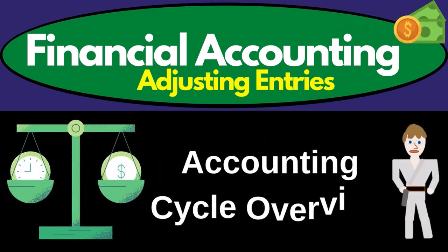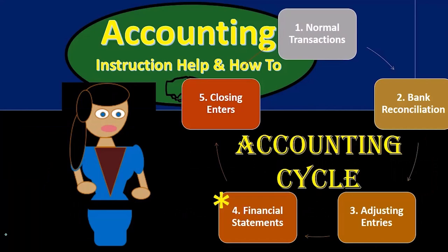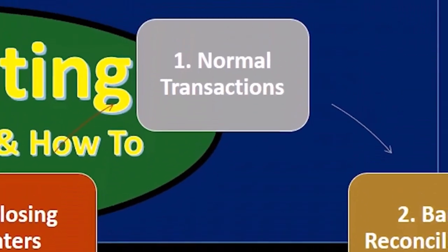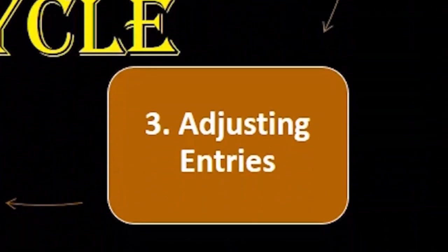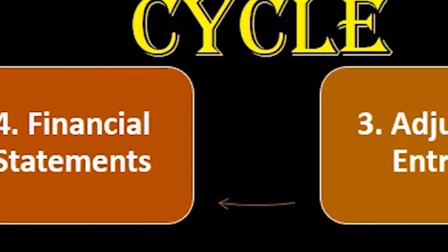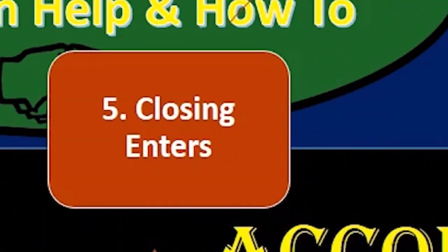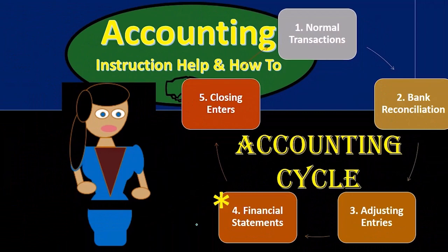In this presentation we're going to be talking about the accounting cycle, or the accounting process — that process that the accounting department will go through on a systematic basis, over and over again. Typically thought of as a monthly process, although it could be thought of as a yearly process or some other time period. These are going to be the steps we'll go through, always keeping in mind that end goal of financial accounting: the financial statements.